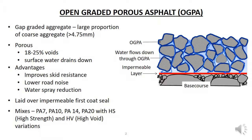This results in 18-25% of the asphalt being voids. The voids result in the mix being porous, and porosity means that water can flow through it. Gap grading may also be known as open grading, hence the name open graded porous asphalt.